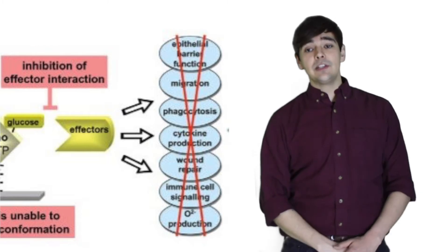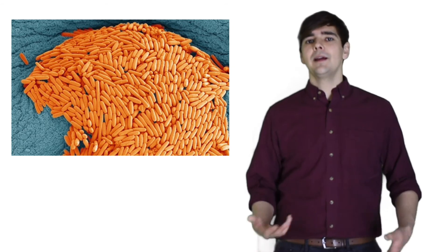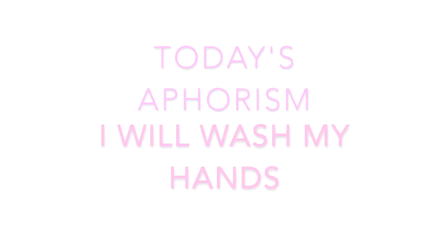In epithelial tissues in the GI tract, this most noticeably disrupts proteins responsible for maintaining the cytoskeleton, leading to apoptosis. Once epithelial cells die, they lyse, and their biological materials can be uptaken and digested by the bacterial colony.